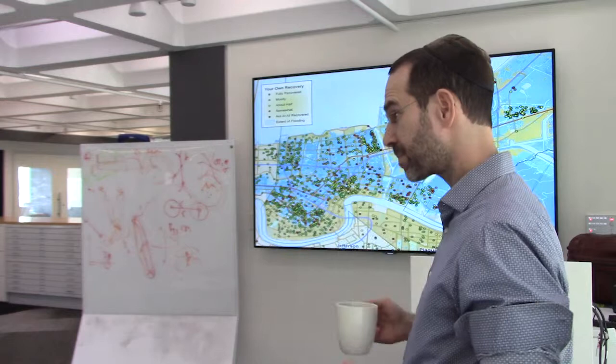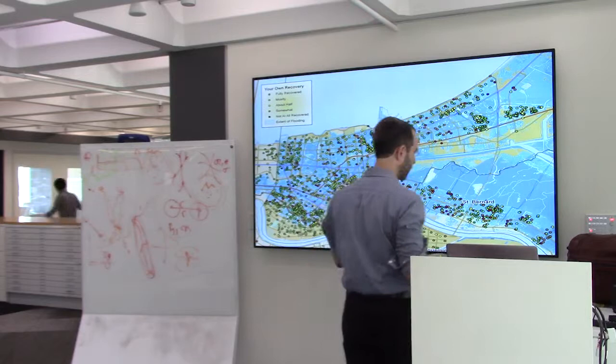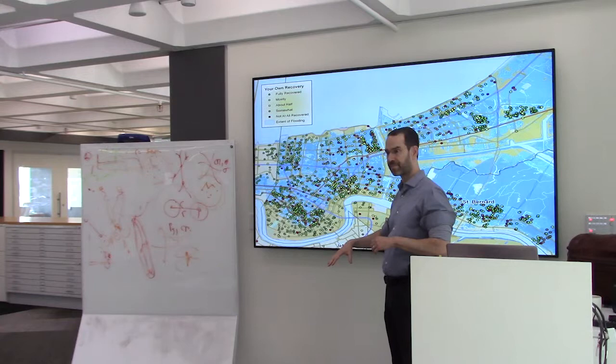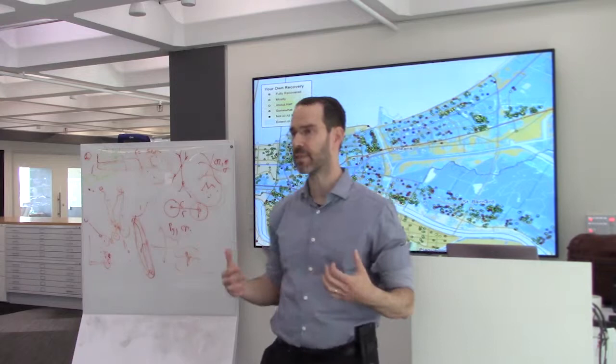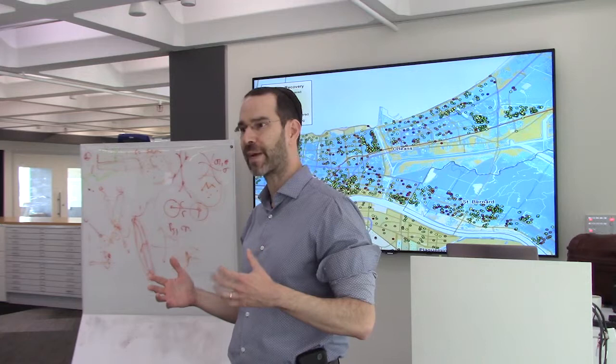You guys tell me, what's the correlation between water depth and recovery levels? Seems to be random, right? Here's what I thought we'd find: every area that was less flooded would be solid green, and all the dark blue would be solid red. The correlation's about 0.16, meaning pretty random.